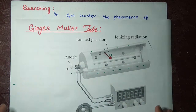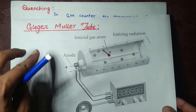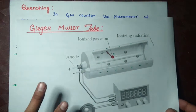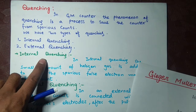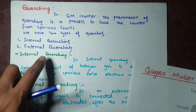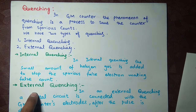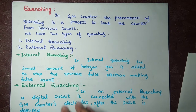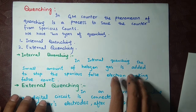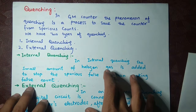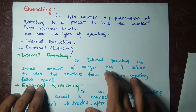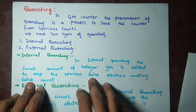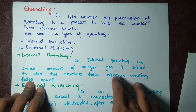We have generally two types of quenching: one is internal quenching and the other is external quenching. In internal quenching, a small amount of halogen gas is added to stop the spurious false electrons from making a false count.